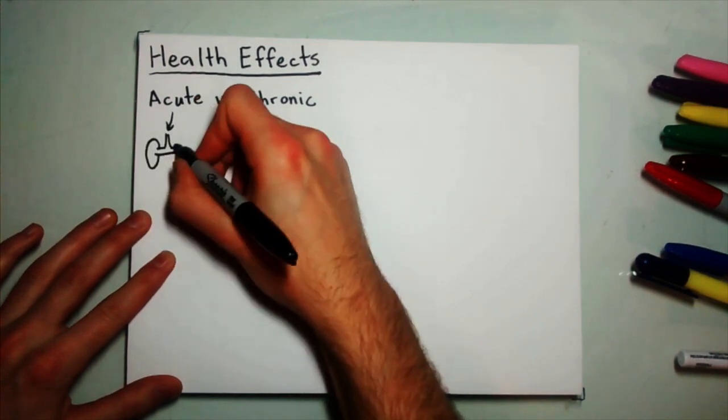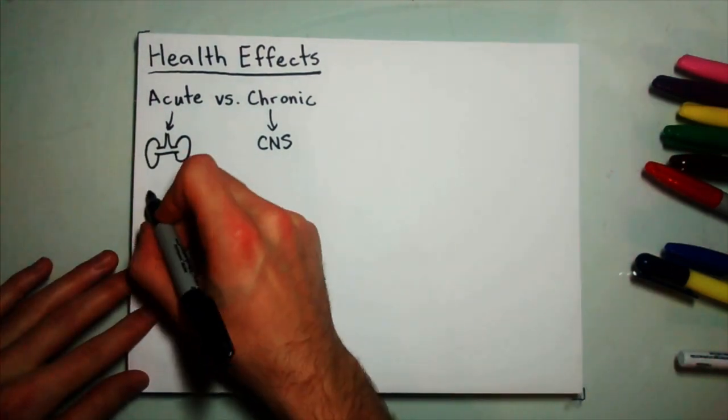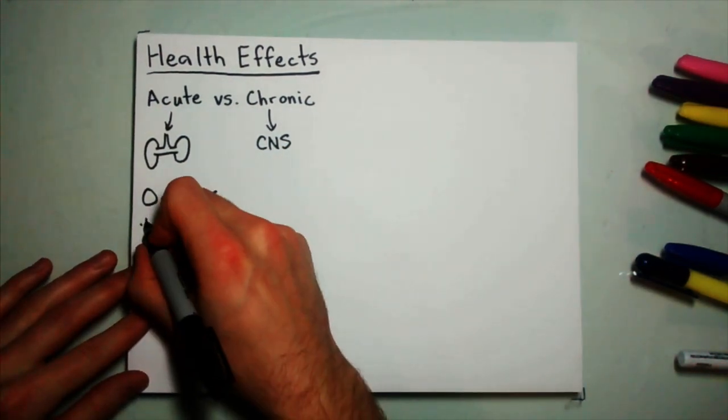Acute poisonings usually occur due to the inhalation of large amounts of vaporous mercury, with the lungs being the major target. This can lead to acute bronchitis, bronchiolitis, and pneumonia.